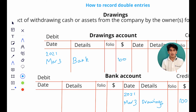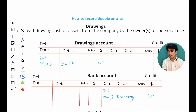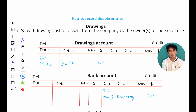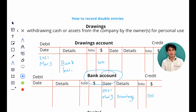Now take for example owner Alex decided to take away inventory worth one hundred dollars. We'll just write over here instead of bank account we'll write inventory account. So instead of having the bank account over here we'll have the inventory account.